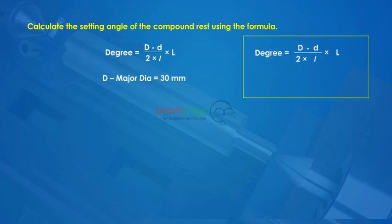D major diameter is equal to 30mm. d minor diameter is equal to 24mm.